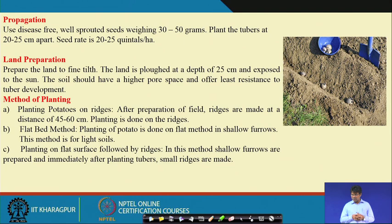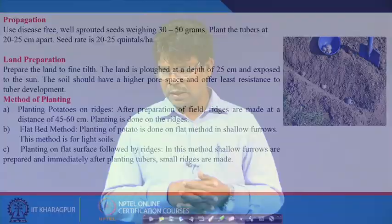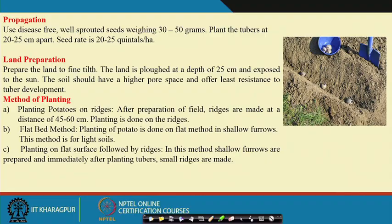Ridge planting is preferred especially in areas that suffer from high rainfall, so that water does not accumulate around the tubers. Water drains out to the furrow areas and the potato seeds are protected from water accumulation. Ridge planting is generally preferred for potato cultivation.